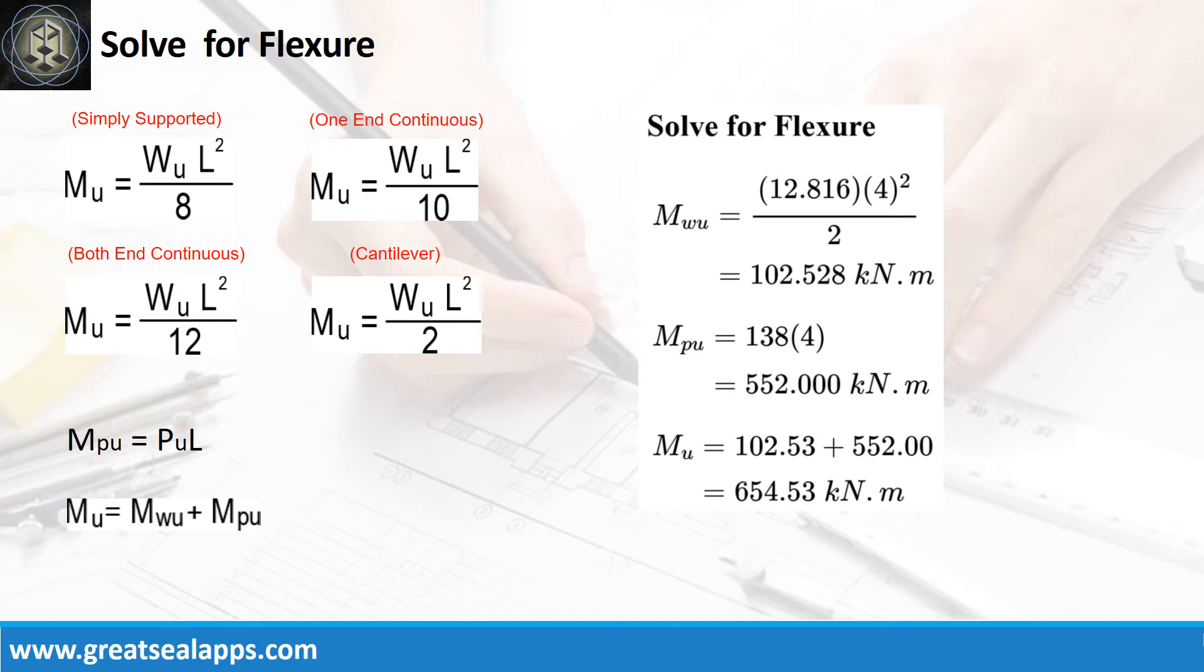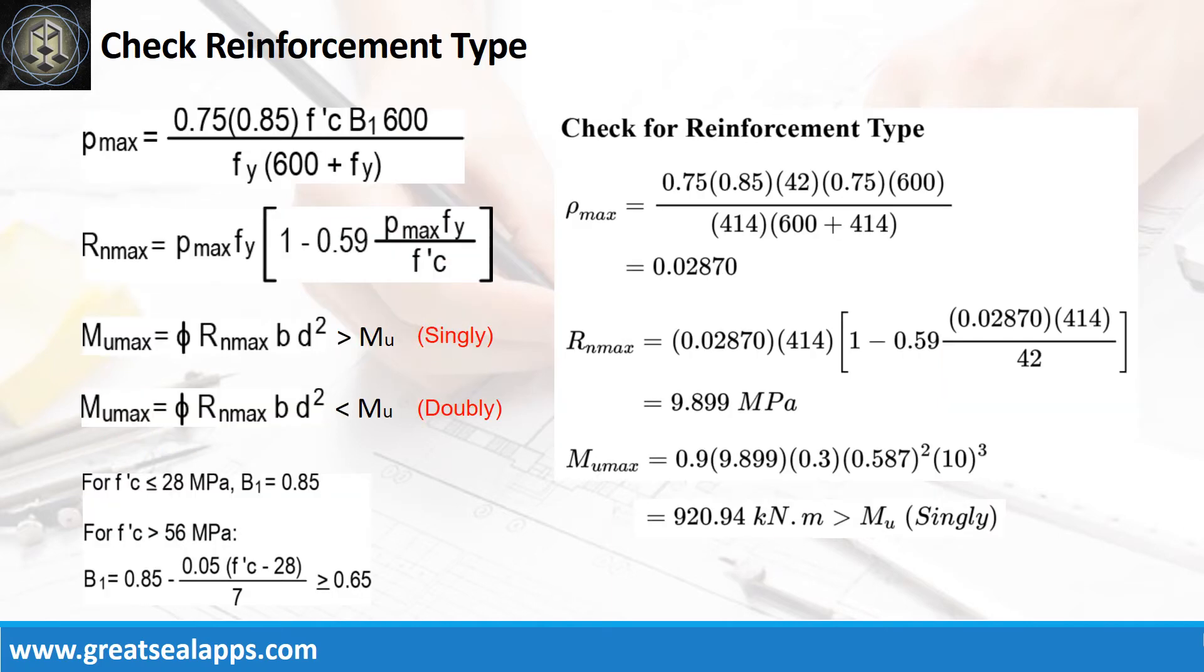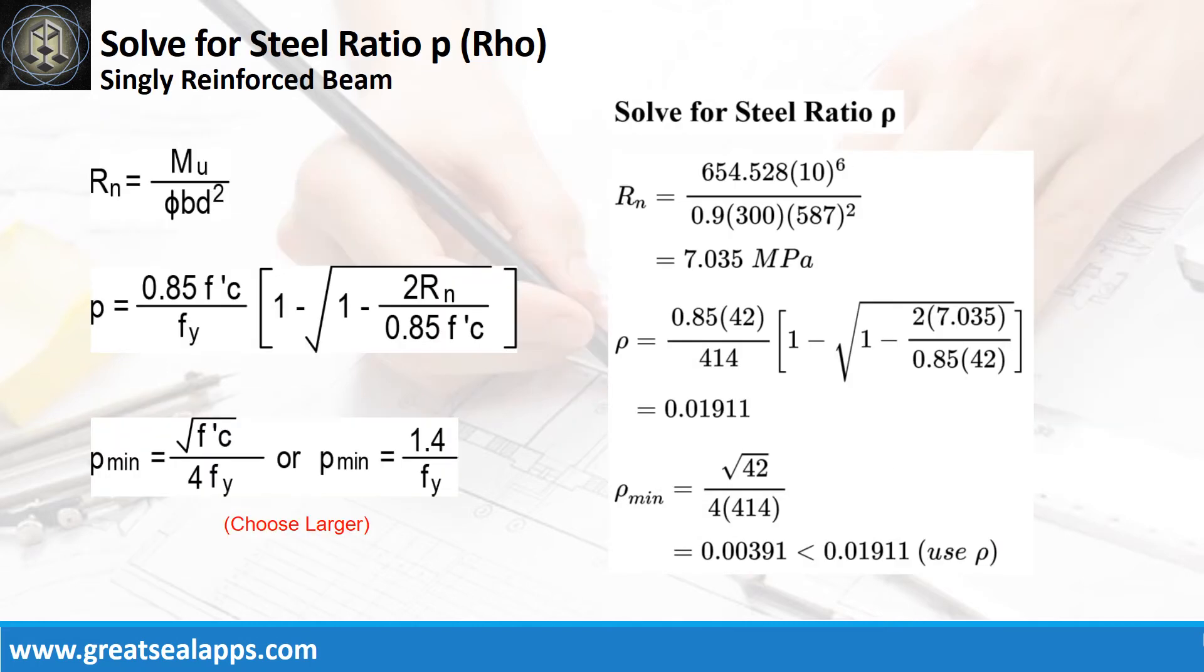The ρ max from given design criteria is 0.0287. Then RN max is 9.899 MPa. And finally, the MU max is 920.94 kN·m, greater than 654.53 kN·m for singly reinforced beam design.